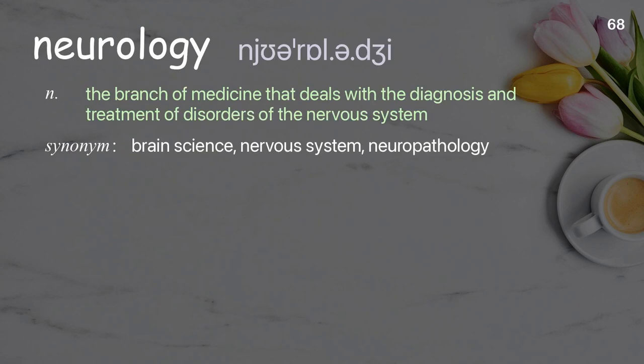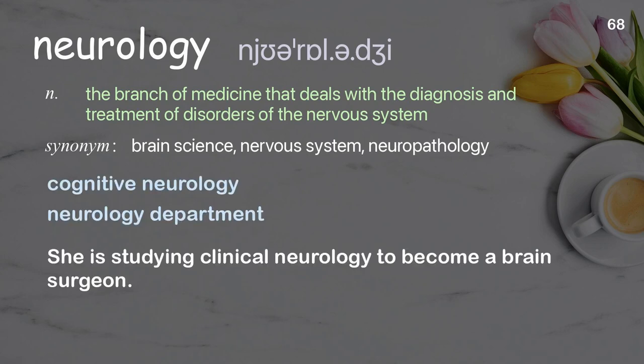Neurology. The branch of medicine that deals with the diagnosis and treatment of disorders of the nervous system. Examples: cognitive neurology, neurology department. She is studying clinical neurology to become a brain surgeon.